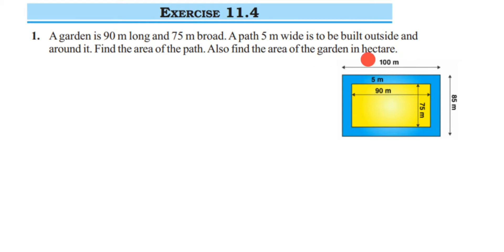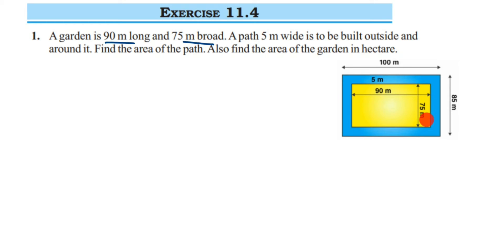Here's a figure. We have given the length and breadth of the garden. The yellow color you see in the figure is the garden, where the length is 90 meters and the breadth is 75 meters. They've also given that there is a path 5 meters wide built around it and outside.